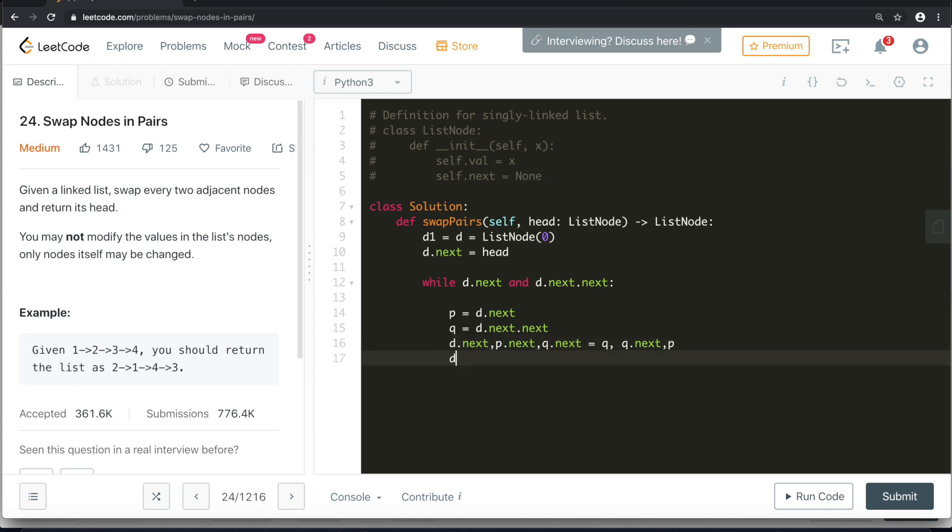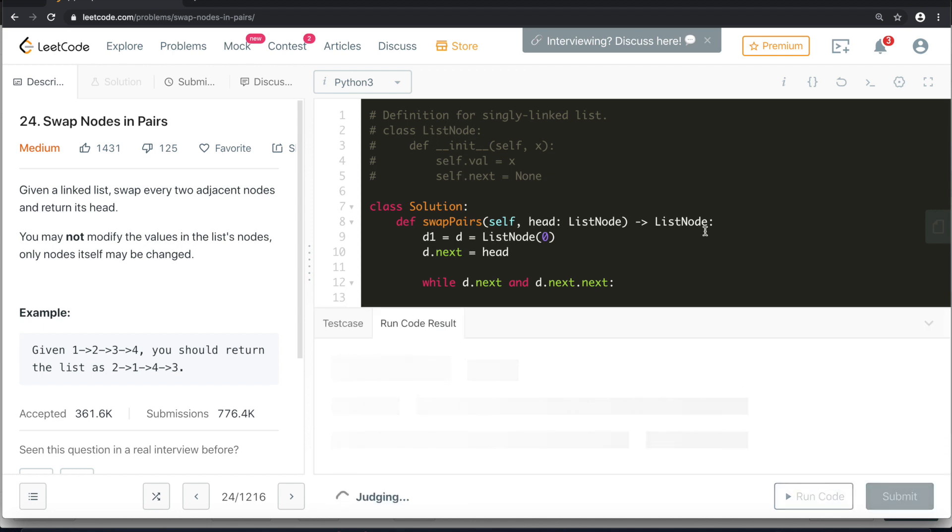And at the end, we will take care of our dummy value. We will again put it equal to p, and at the end we will return d1.next, because in the starting we took these two, and we are just returning d.next because it's a dummy node, we don't want it to print.